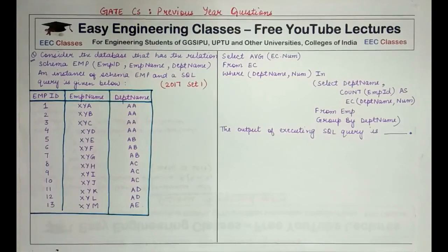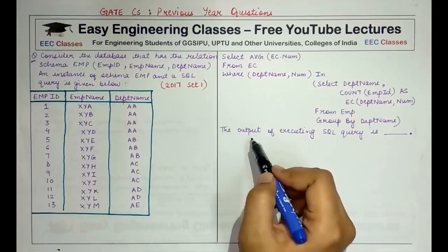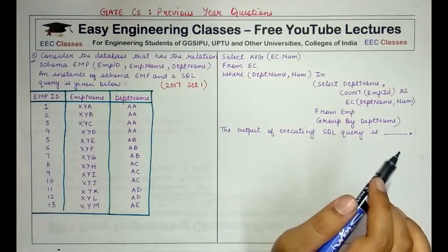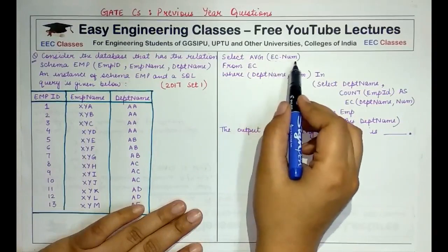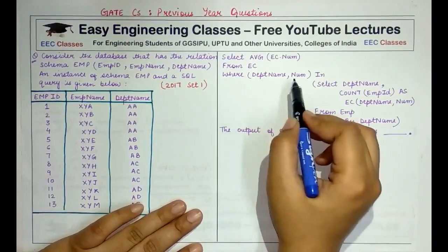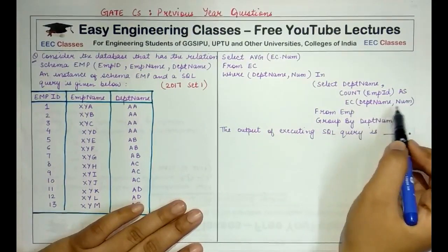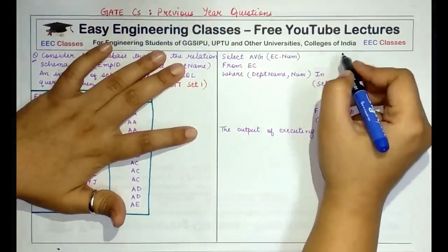You are given a table and told to consider a database with the relation schema emp, having columns emp_id, emp_name, and department_name. An instance of the schema emp and an SQL query are given. You have to find the output after executing the SQL query. This is a numerical type question — no options are provided. The query says: SELECT AVG(ec.num) FROM ec WHERE (dept_name, num) IN (SELECT dept_name, COUNT(emp_id) AS num FROM emp GROUP BY dept_name).